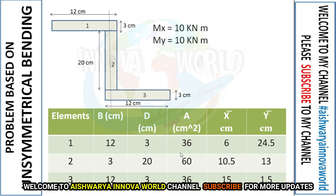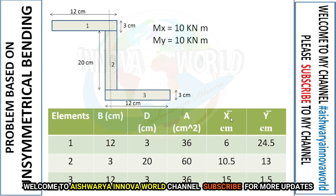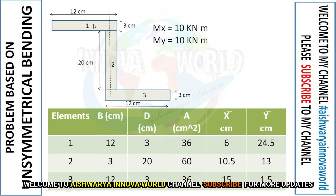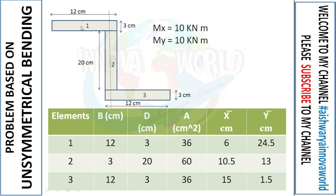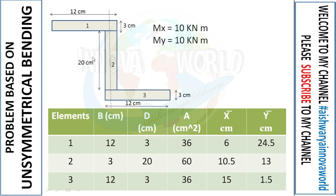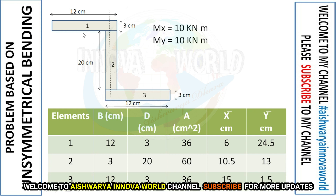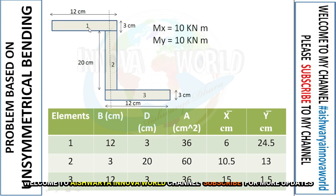For the first element: breadth = 12 cm, depth = 3 cm, area = 12 × 3 = 36 cm². The x̄ centroid from the reference point is 12/2 = 6 cm. For ȳ, the distance is 20 + 3 + 1.5 = 24.5 cm.